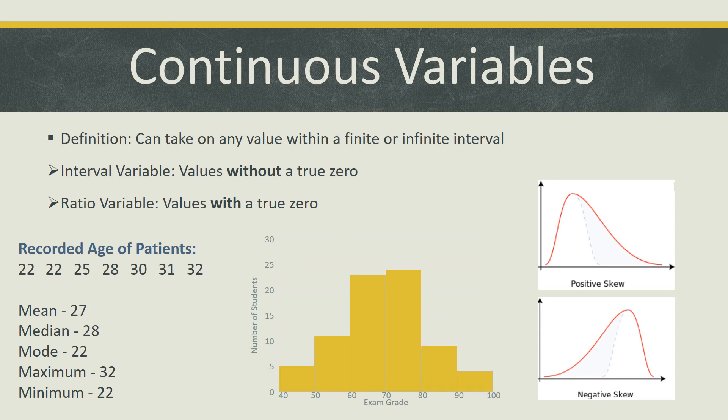Interval variables are values without a true zero, whereas ratio variables are values with a true zero. For example, temperature would be an interval variable because there is not a true zero with temperature. Weight would be an example of a ratio variable because it has a true zero.